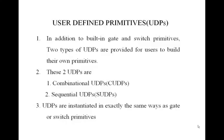Let us discuss user-defined primitives. As we have built-in gates and switch primitives, likewise user-defined primitives — the name itself suggests that we can describe any hardware that we are looking for or desiring using this user-defined primitive feature. There are two types of UDPs: one is a combinational UDP (C-UDP) and the other is a sequential UDP (S-UDP).